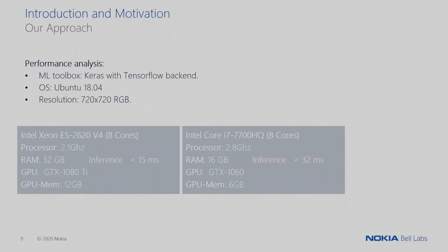We achieve real-time performance using Keras with TensorFlow as the backend and Ubuntu as the operating system. We used a resolution of 720 by 720, as square resolution is quite typical for VR systems. We tested the network on two different machines: on a powerful GPU — the GTX 1080 Ti with 12 gigabytes of dedicated GPU memory — we achieved an inference time below 15 milliseconds, allowing the algorithm to run at 60 Hz. Even on a much less powerful machine, we can still achieve inference times of less than 32 milliseconds, corresponding to around 30 Hz update rate.